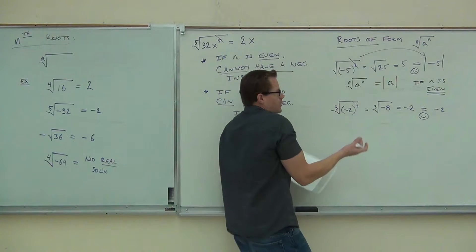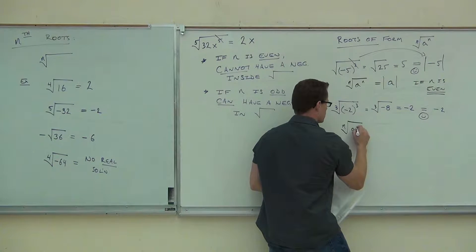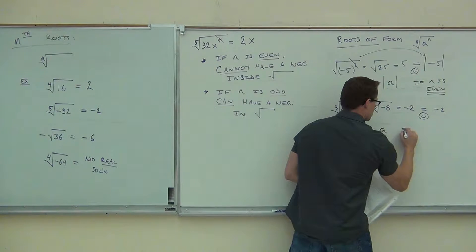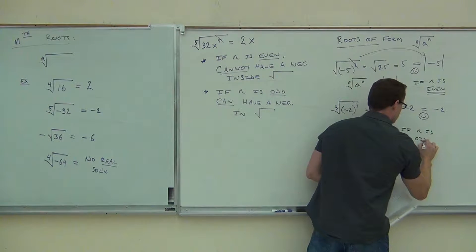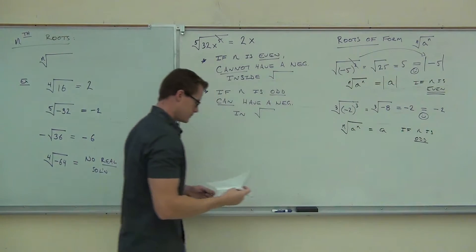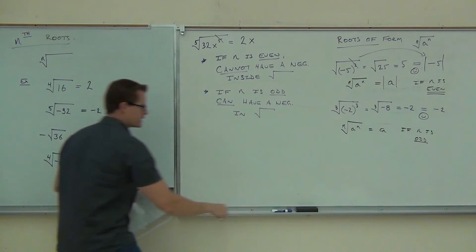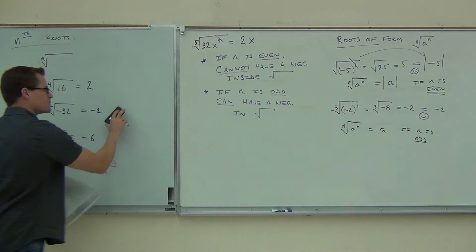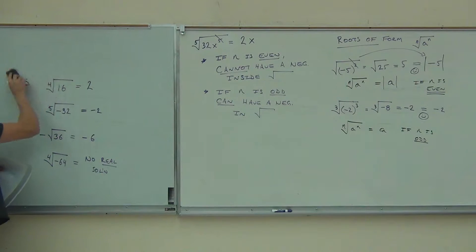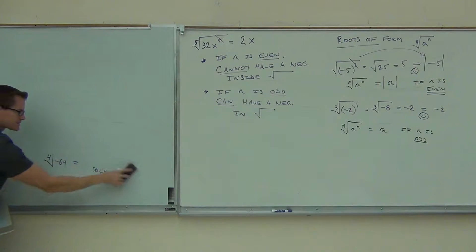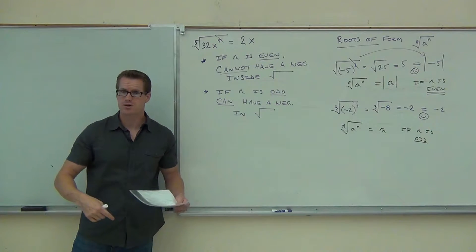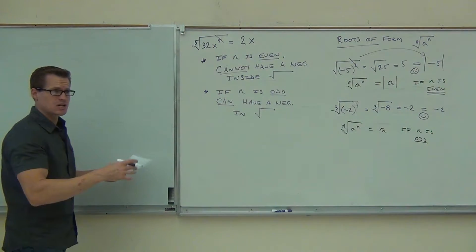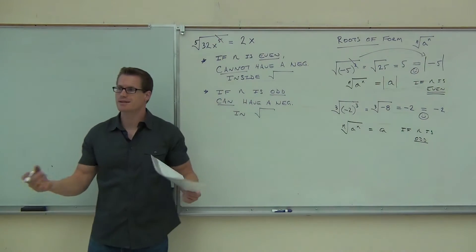If n is odd though, it doesn't matter. I want to show you a couple examples in our last minute here just to make sure that you guys really see this. By the way, these don't take a whole lot of work. You're just going to cross stuff out and understand that one of them is going to have absolute value and one of them is not. If it's even, it has absolute value around it. If it's odd, it doesn't.